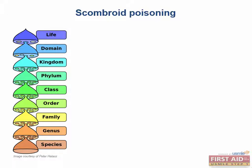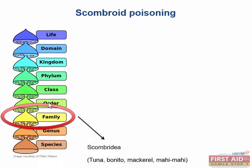We now have our third fish disease: scombroid poisoning, which is going to be caused by the dark-meated fish. Going back to taxonomy, we're going to focus primarily on the fish from the family Scombridae. These fish include the tuna, bonito, mackerel, and mahi-mahi. When these fish are improperly stored, this can lead to scombroid poisoning.